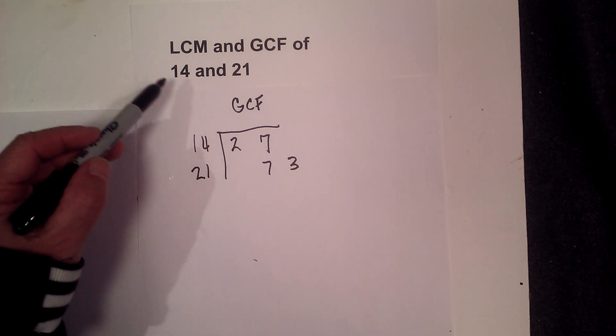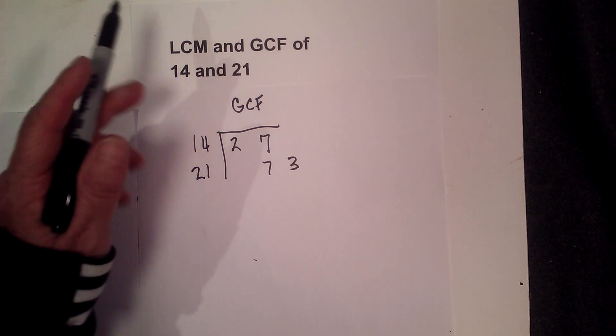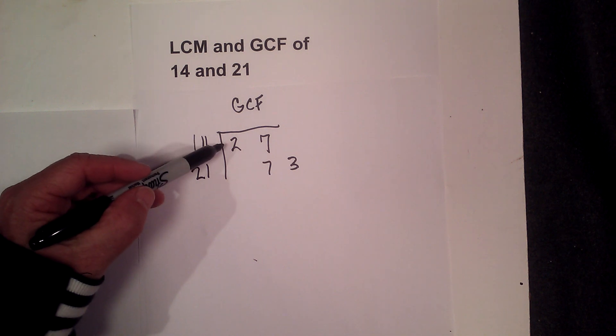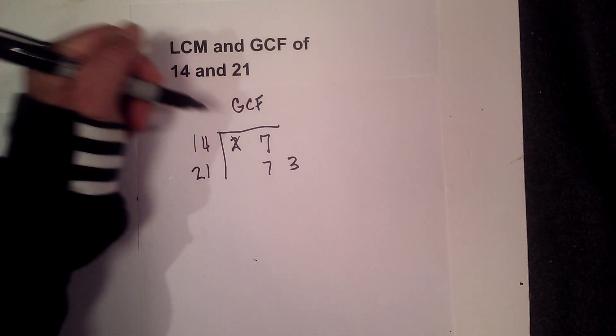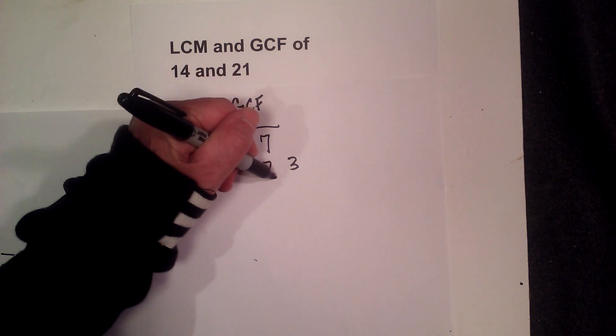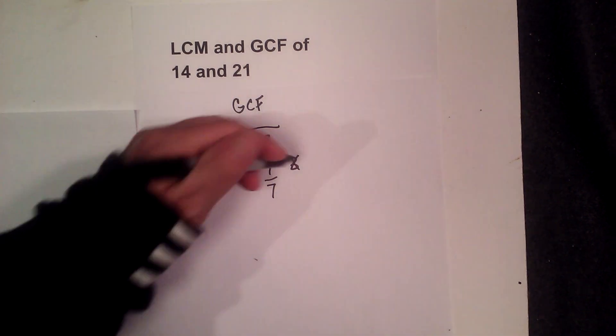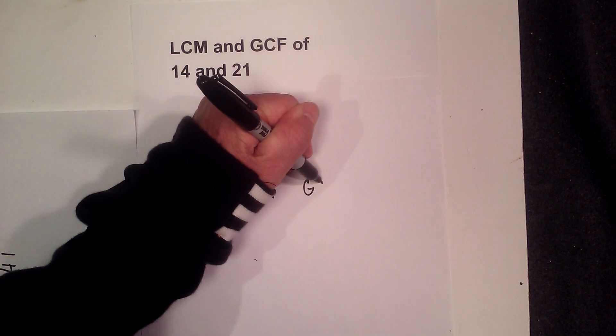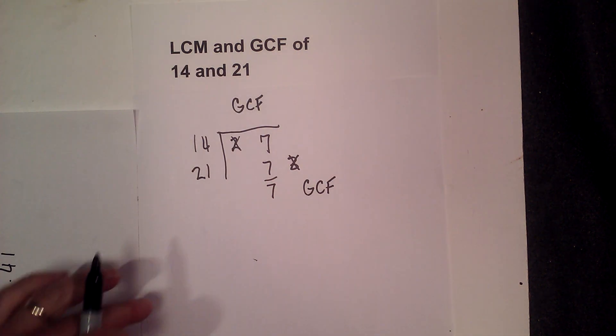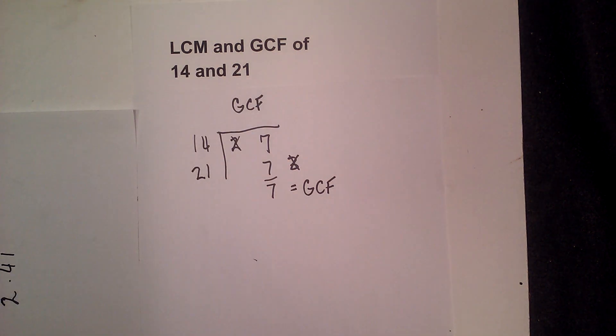So you only use vertical pairs. You don't have a vertical pair here, you have a vertical pair of 7, and you can't use the 3. So the greatest common factor of 14 and 21 equals 7. I hope that helps in finding the LCM and GCF of 14 and 21.